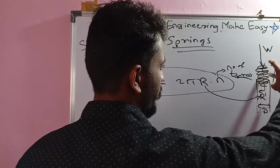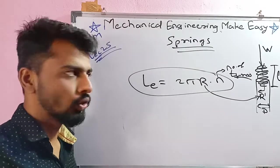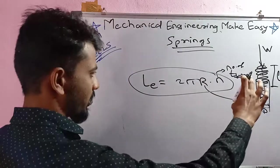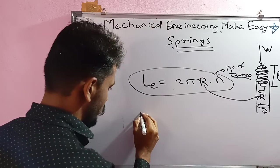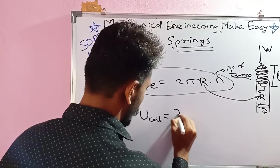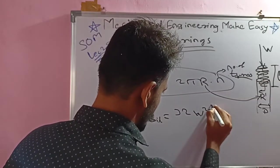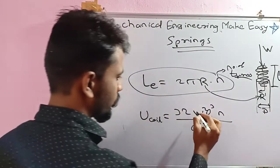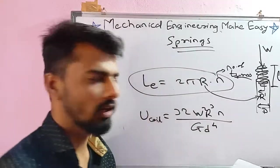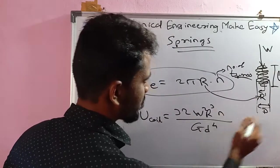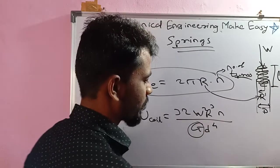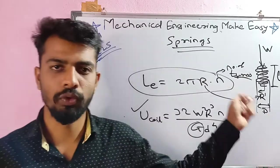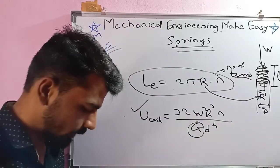The strain energy stored in the coil, due to torsion only (since we are considering a torsion spring — closed coil helical spring), is: U = 32 W² R³ n divided by G d⁴, where W is axial load, R is coil radius, n is number of turns, G is modulus of rigidity, and d is the wire diameter.